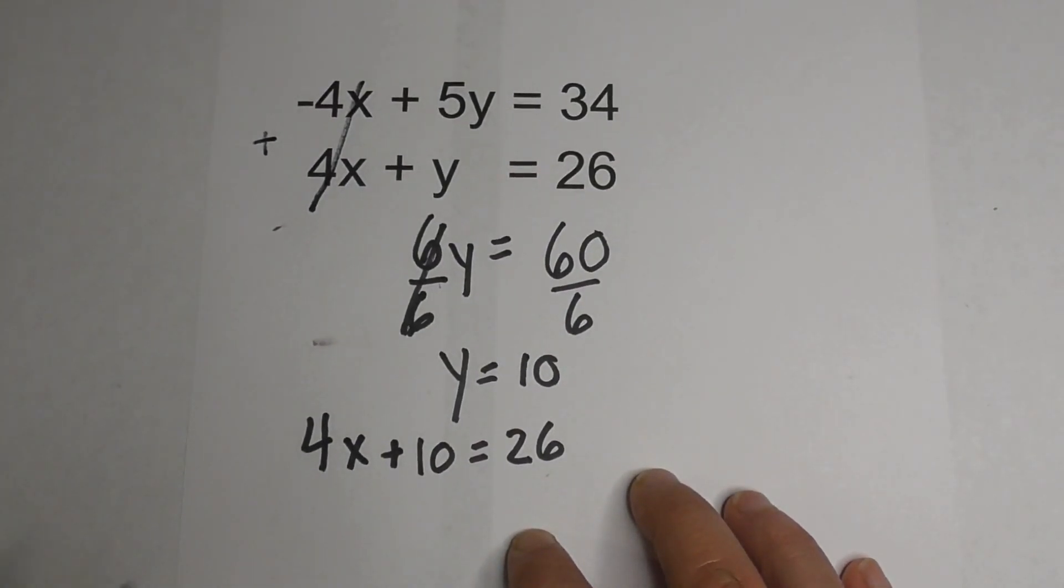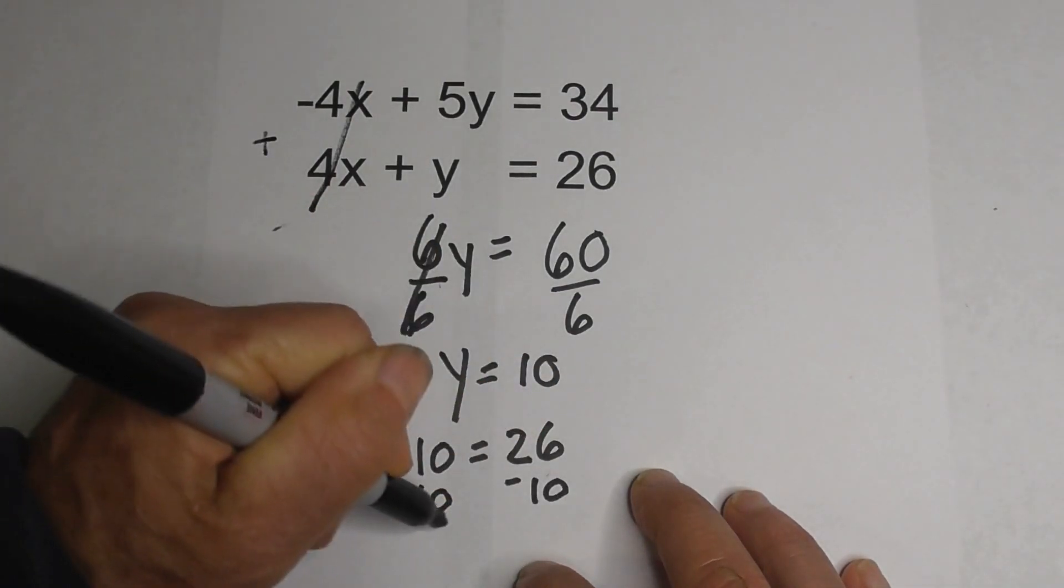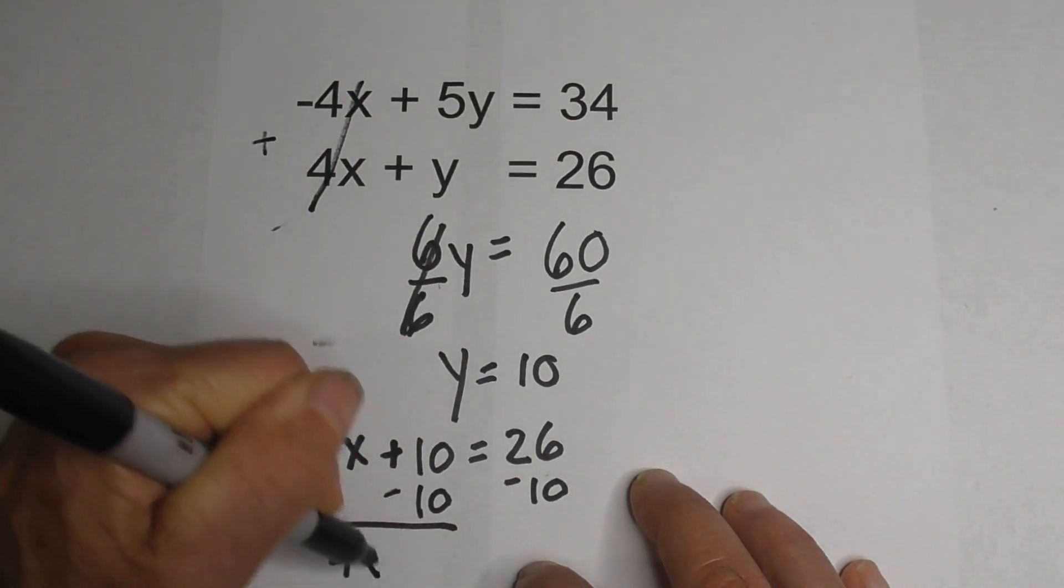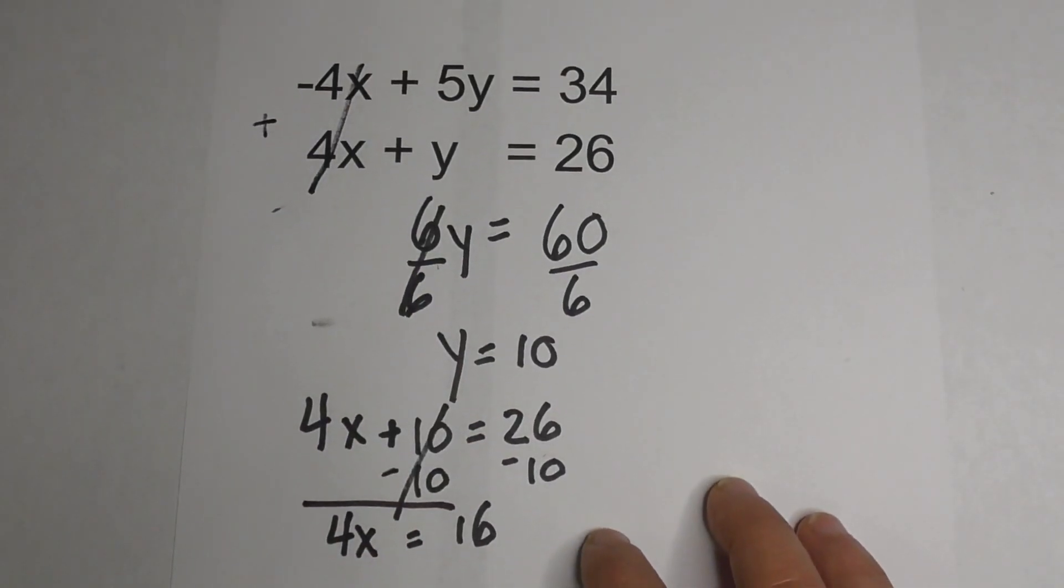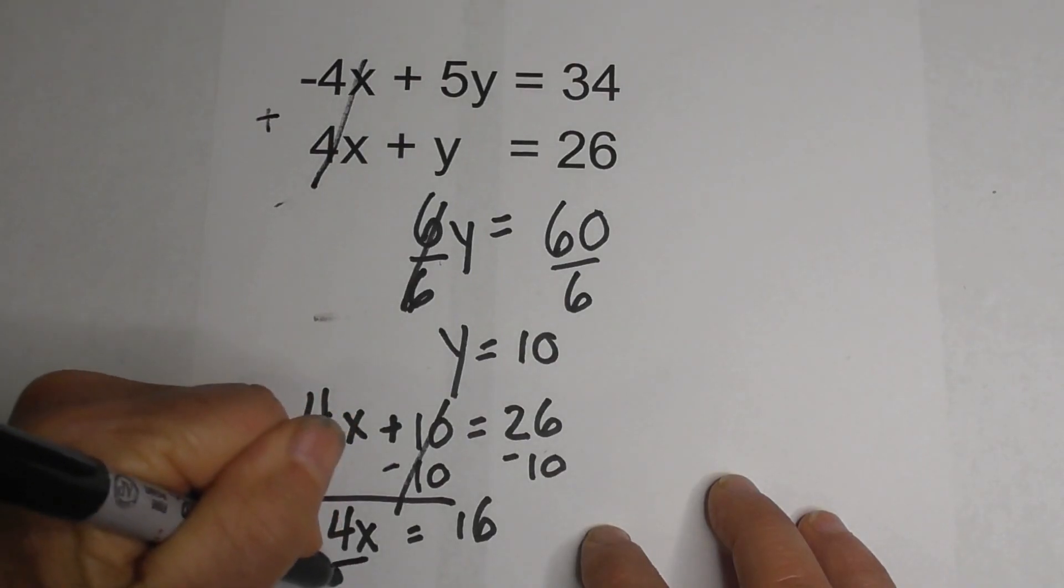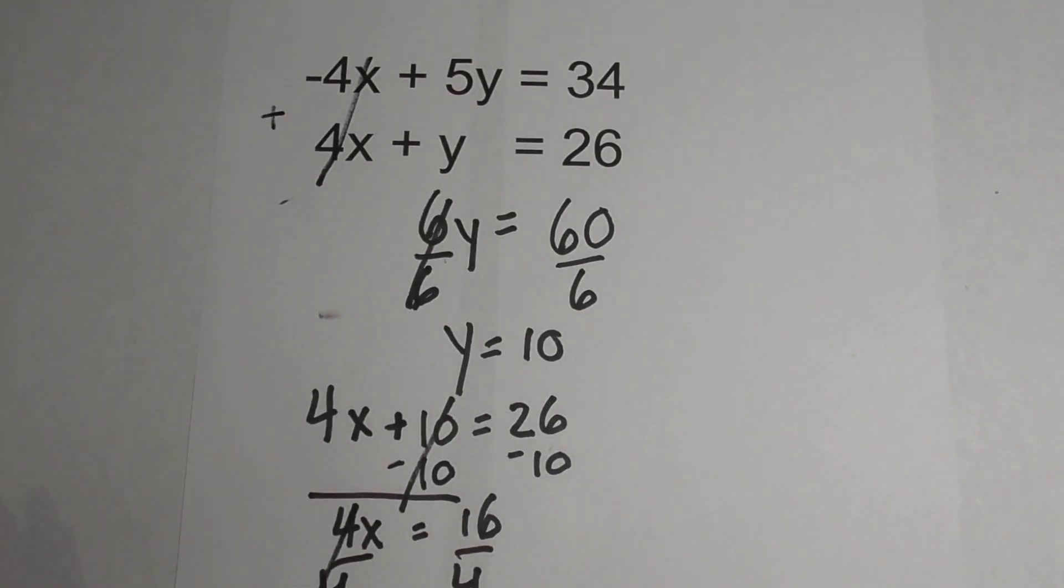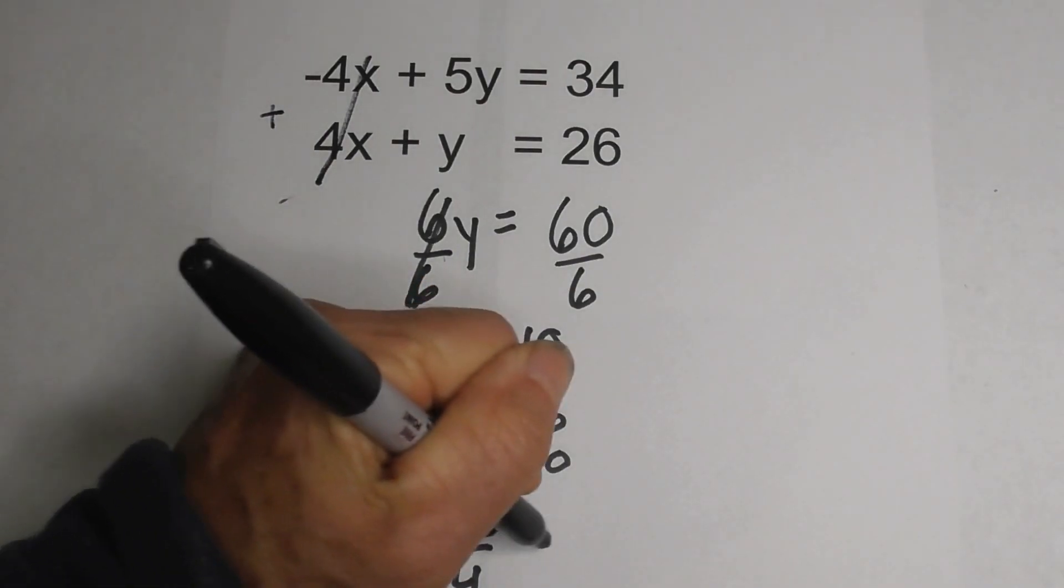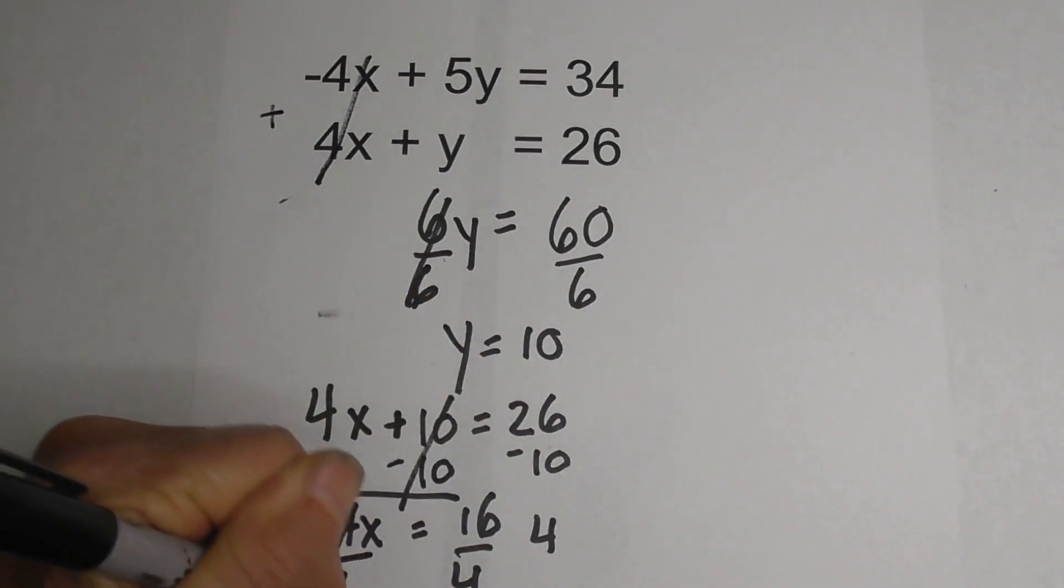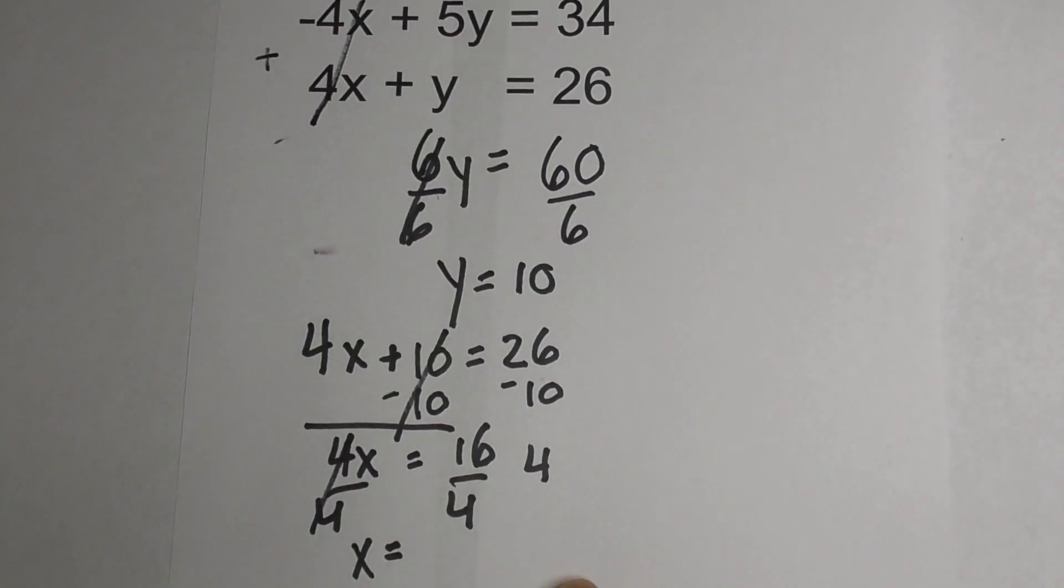I need to solve for x. So I'm going to subtract 10 from both sides. That gives you 4x, these cancel, equals 16. And now we're going to divide through by 4. And we get these cancel and we get 16 divided by 4 is 4. So we get x equals 4.